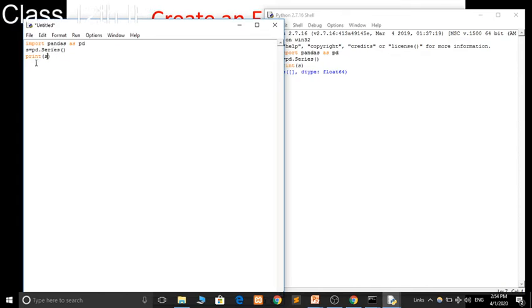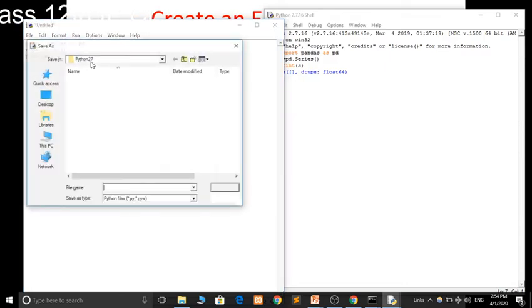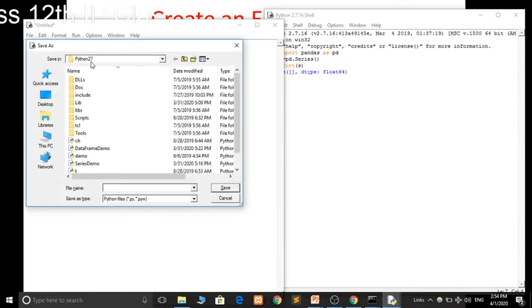And then print s. So basically here pd is an object of pandas, pandas library pd. And series is our constructor.